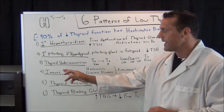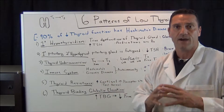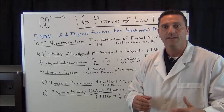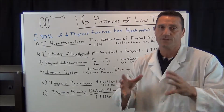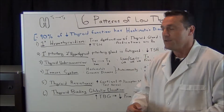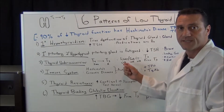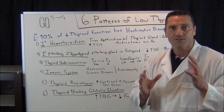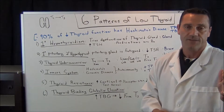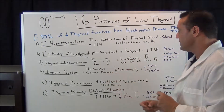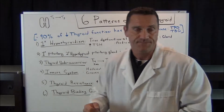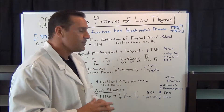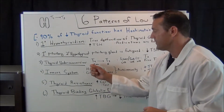The third pattern is thyroid under-conversion. The thyroid gland produces thyroid hormone in the form of T4, which is converted from inactive T4 to active T3 in three places: 60% in the liver, 20% in the gut, and 20% at the target tissue. If there is a disruption in that conversion — due to leaky gut or increased cortisol with inflammation — that will lower the conversion from T4 to T3.